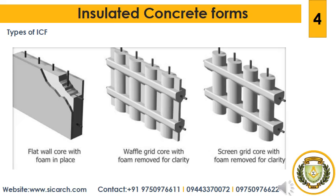The Screen Grid ICF wall system is often termed post and beam. It has a perforated concrete wall of varying thickness, with a nominal concrete thickness of 6 or 8 inches for the horizontal and vertical concrete members. Maximum spacing of vertical cores and horizontal cores is 12 inches. Unlike Waffle Grid ICFs, the Screen Grid systems do not have webs. Bracing and steel reinforcing are as required by design or the manufacturer's technical data.